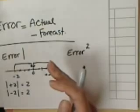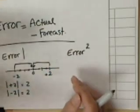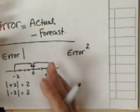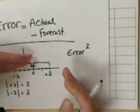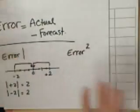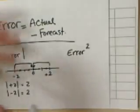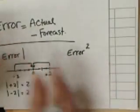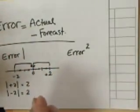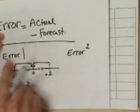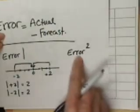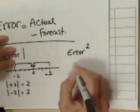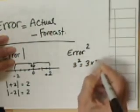The reason we use absolute or squared error is that forecasts can be lower or higher than the actual values, producing positive and negative errors. If you just add those errors up, they may sum to zero, and you might erroneously think the model is excellent when it isn't. To eliminate that positive/negative cancellation, we compute absolute error or square the error so it's always a positive number. For example, 3 squared is 9.